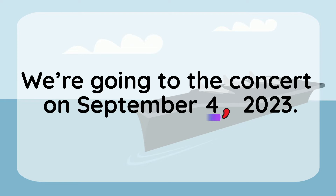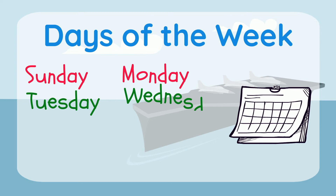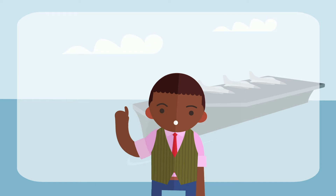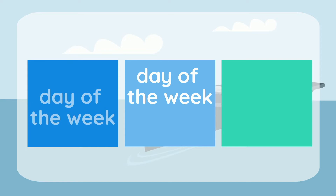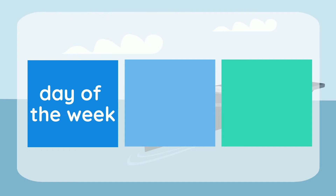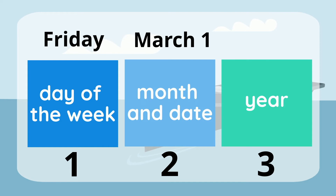But what if you want to add the day as well? You know the days of the week: Sunday, Monday, Tuesday, Wednesday, Thursday, Friday, Saturday. Let's write the date again, but this time including the day of the week. The day comes right at the front, and we divide it into three parts: day of the week, month and date, then year. So: Friday, March 1st, 2024. Let's put the comma here just after the day, and another one here just after the date.